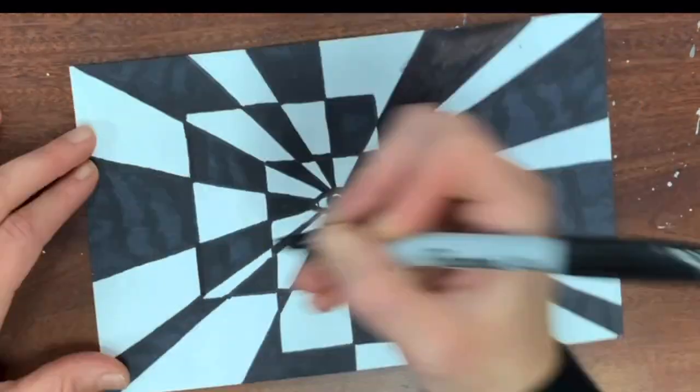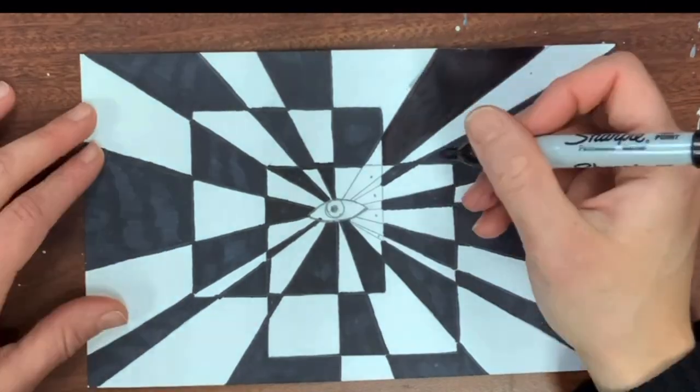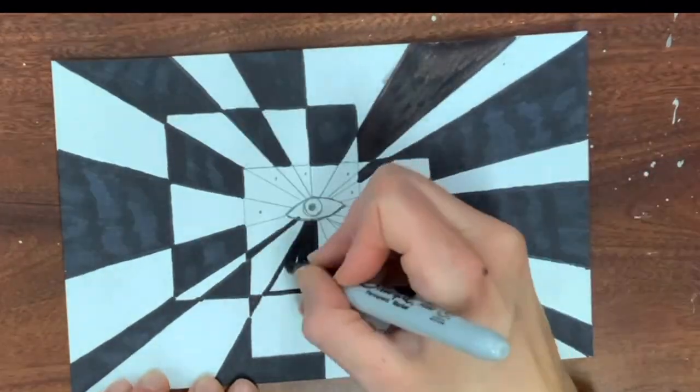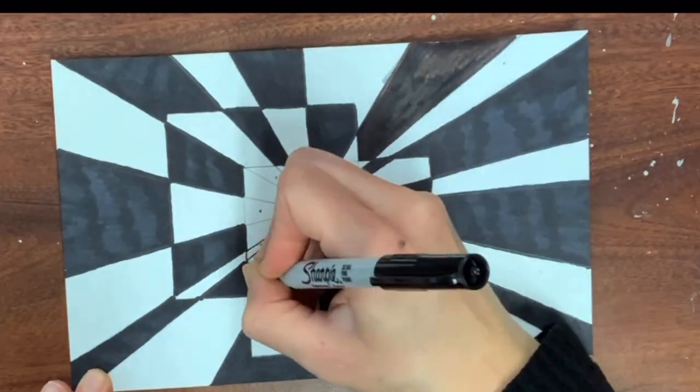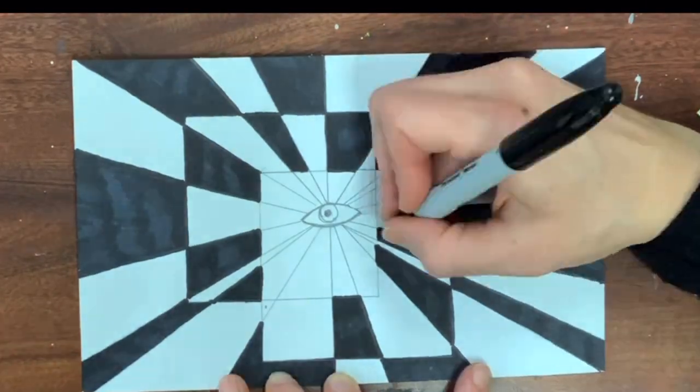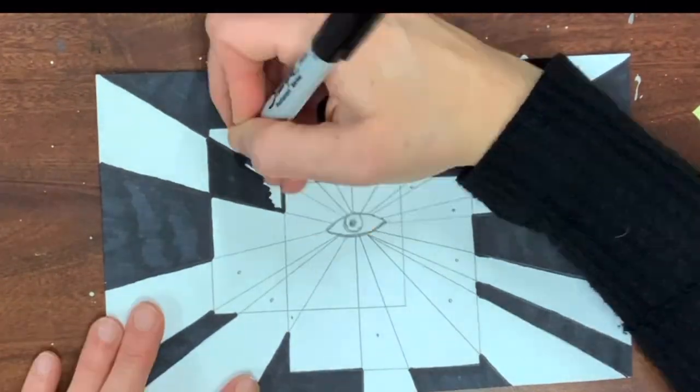Try out this fractured checkerboard op art drawing. It's like a puzzle but it's also a work of art. Op art is short for optical art, a style that uses optical illusions that are usually black and white, however you can use whatever color scheme you would like.